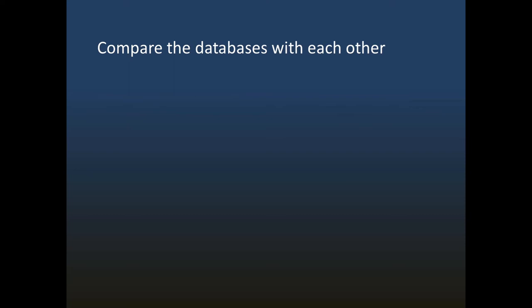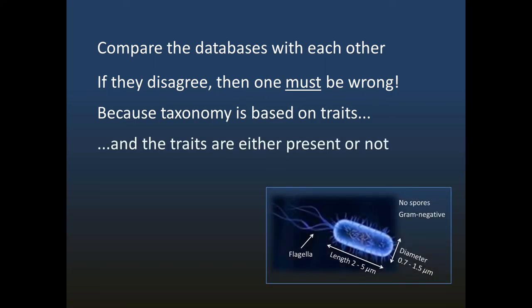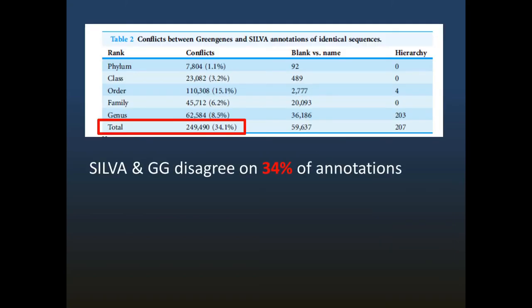The strategy I used is to compare the databases with each other. If they disagree on the taxonomy of an identical sequence, then at least one must be wrong. This follows logically because taxonomy is based on phenotypic traits, and these traits are either present or not, even if we haven't observed the phenotype. Here are the results. I found that SILVA and Greengenes disagree on 34% of taxonomy annotations for identical sequences. There are disagreements at all taxonomic ranks, including around 15% at class rank and 1% disagreements on the phylum.